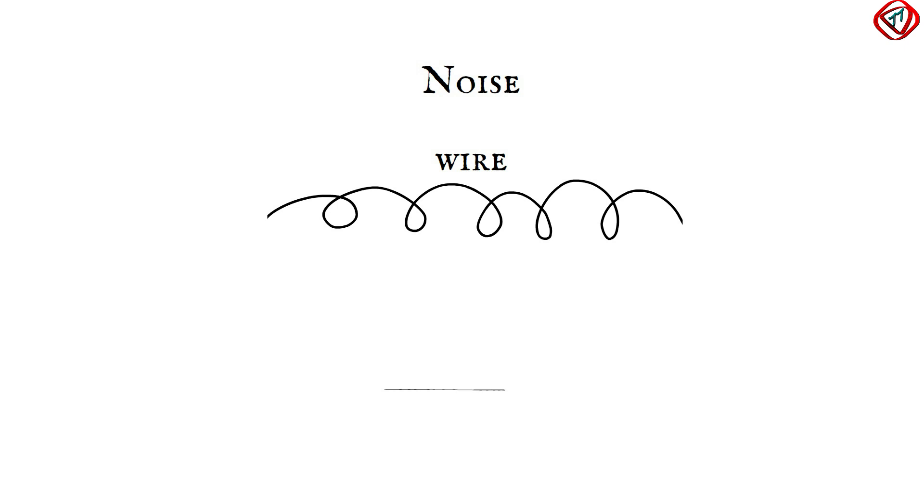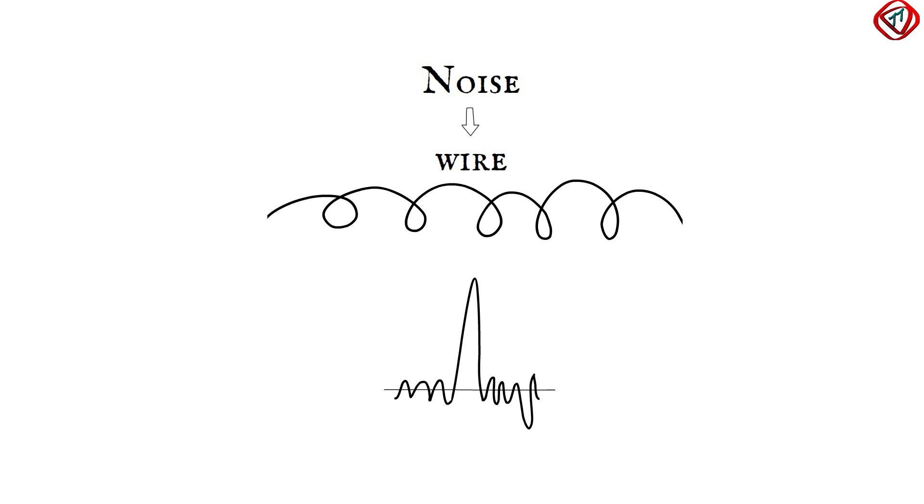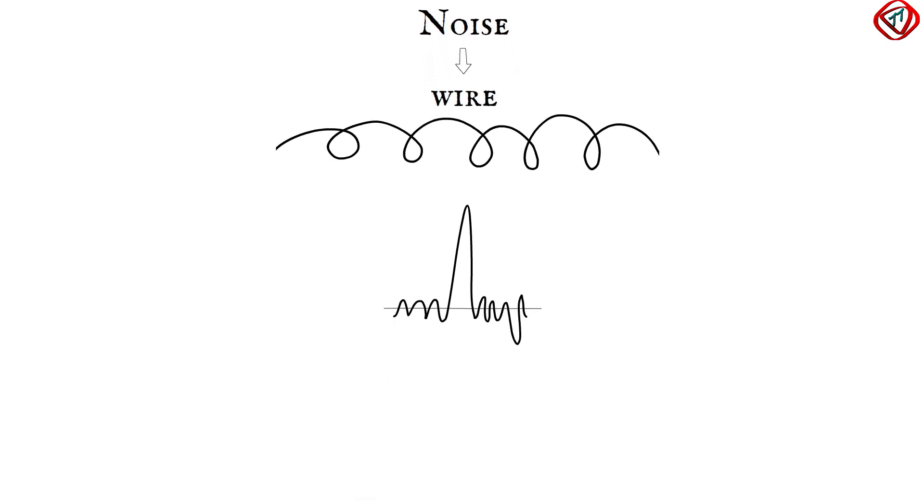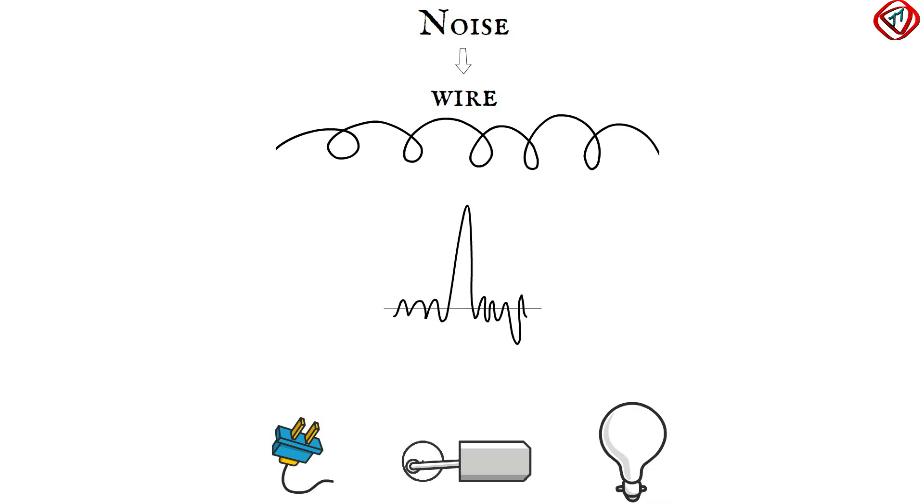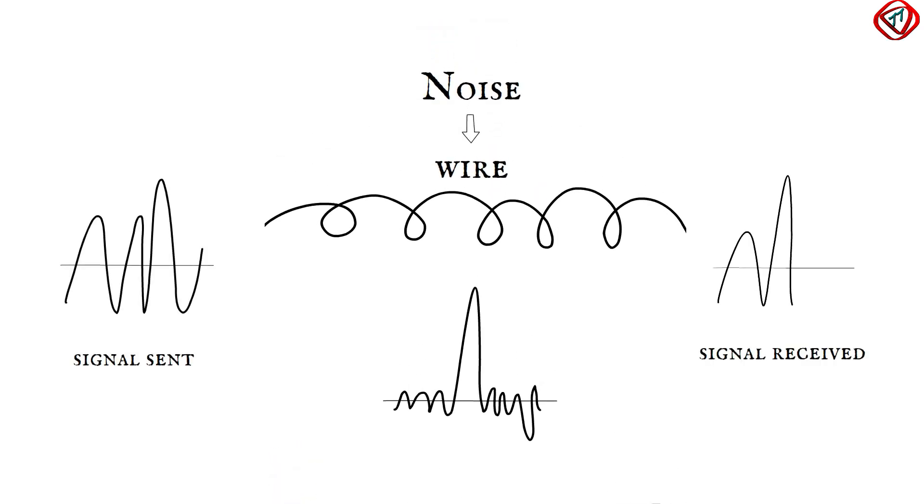In networking, noise is an unwanted signal produced in the transmission medium. It comes from sources that carry electricity, for example, AC power cables, motors, and fluorescent lights. It affects the quality of the desired signal.